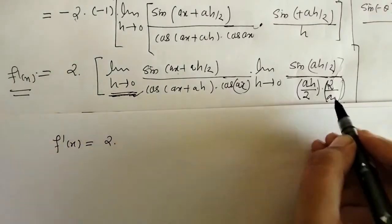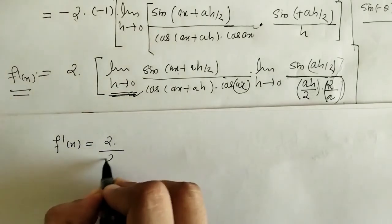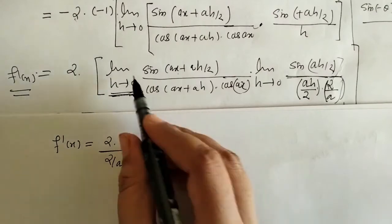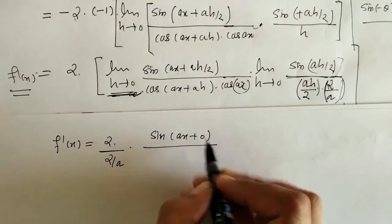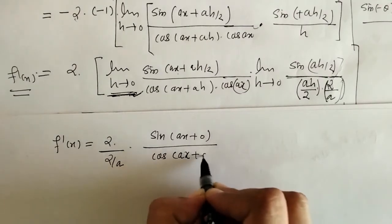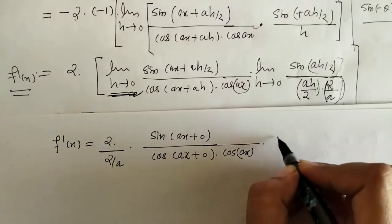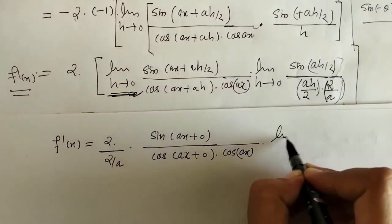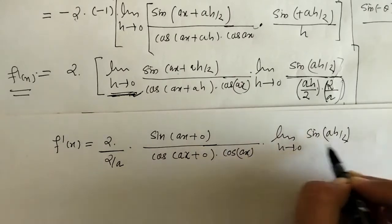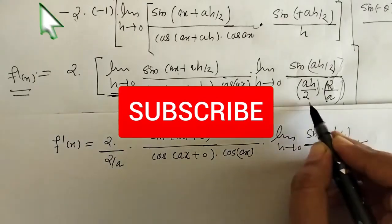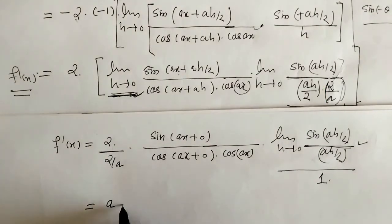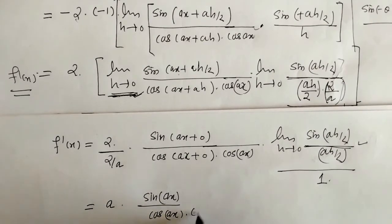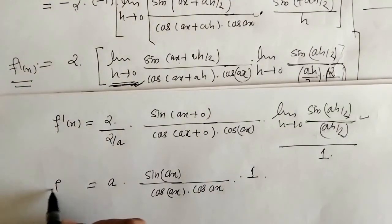Taking 2/a outside the limit since it's constant, we now put h = 0. We get sin(ax + 0) = sin(ax), cos(ax + 0) = cos(ax), and cos(ax) as it is. The standard limit gives 1, the 2's cancel, and we are left with a × sin(ax) / [cos(ax) × cos(ax)].